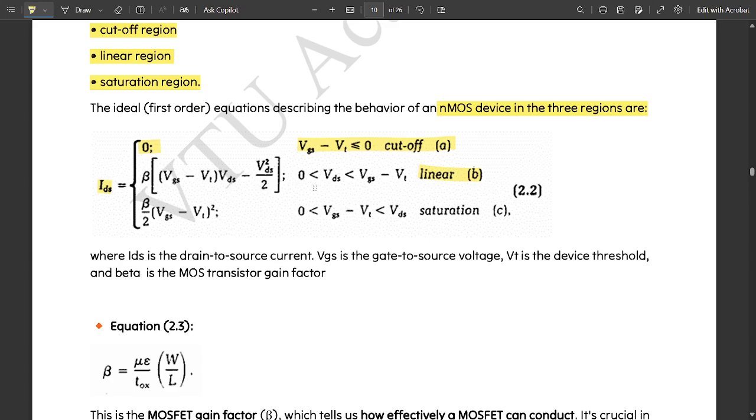In case of linear region, the condition is VDS is less than VGS minus VT and the given equation is beta into VGS minus VT into VDS minus VDS square divided by 2. This is the equation in linear region.